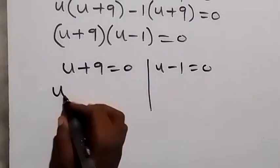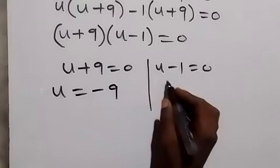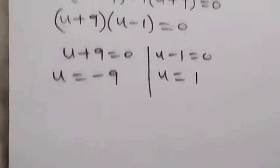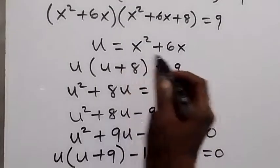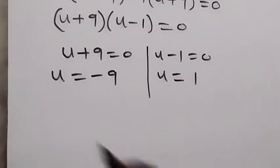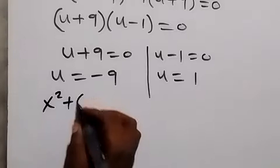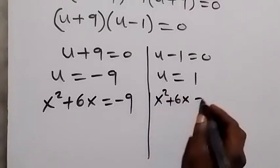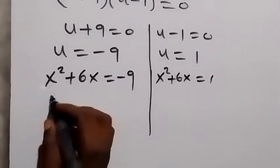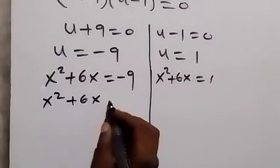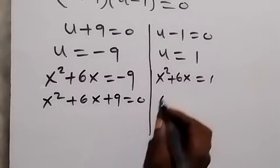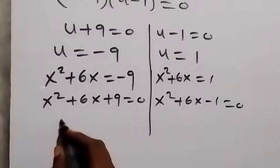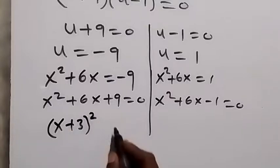The first case: u plus 9 equals 0, which gives u equals minus 9. The second case: u minus 1 equals 0, which gives u equals 1. Since u represents x squared plus 6x, we replace back. For u equals minus 9: x squared plus 6x equals minus 9, rearranged as x squared plus 6x plus 9 equals 0. For u equals 1: x squared plus 6x minus 1 equals 0. The left side can be written as a perfect square: (x plus 3) squared equals 0.